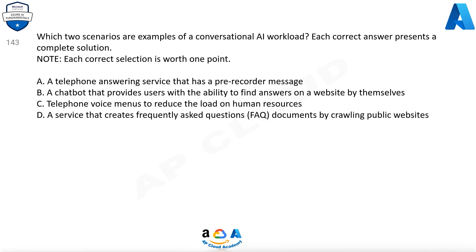Which two scenarios are examples of a conversational AI workload? Each correct answer presents a complete solution. Note, each correct selection is worth one point. A. A telephone answering service that has a pre-recorded message. B. A chatbot that provides users with the ability to find answers on a website by themselves. C. Telephone voice menus to reduce the load on human resources. D. A service that creates frequently asked questions (FAQ) documents by crawling public websites.